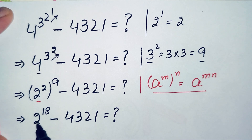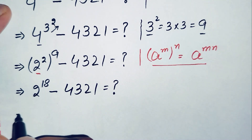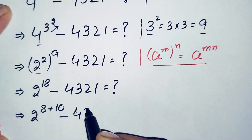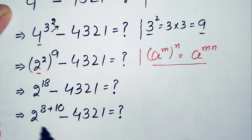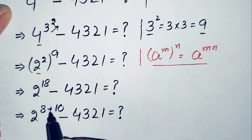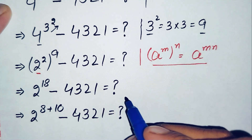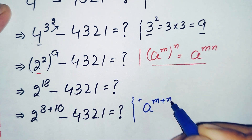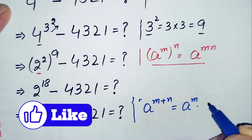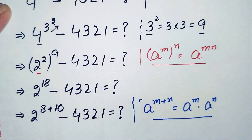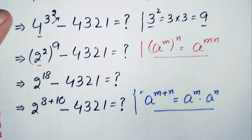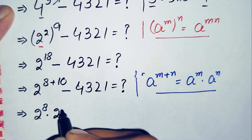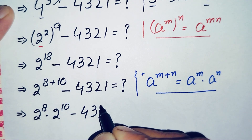Next, we write the power 18 as the sum of 8 plus 10, so this becomes 2^(8+10), minus 4321. Now we apply the exponential identity r^(m+n) = r^m × r^n. Using this identity, the first term becomes 2 raised to power 8 times 2 raised to power 10, so our expression is: 2^8 × 2^10, minus 4321.